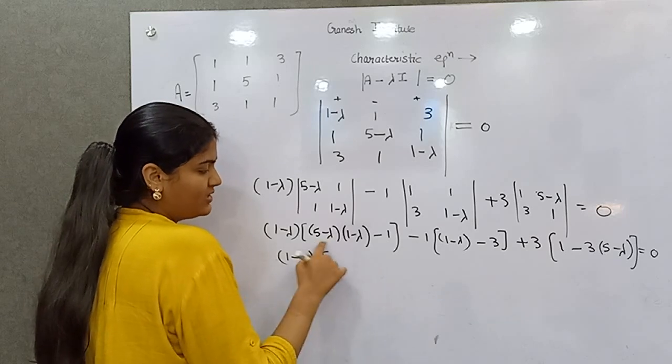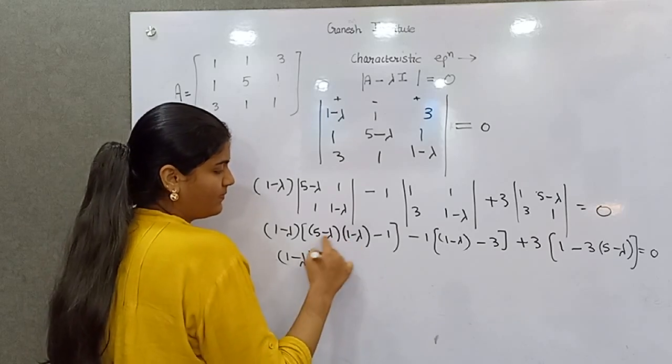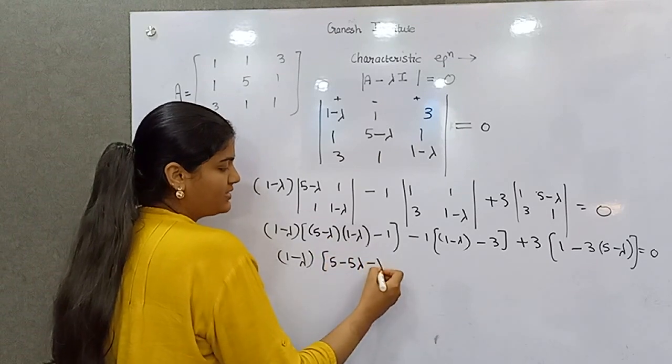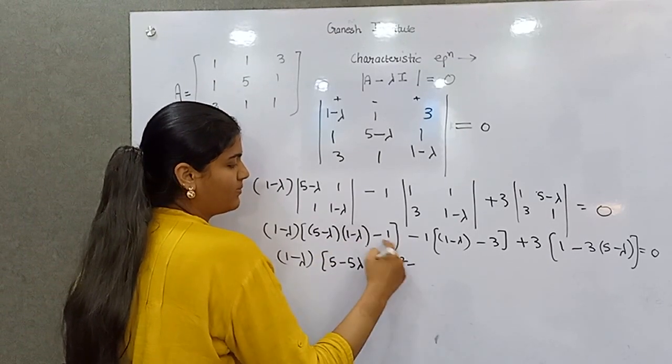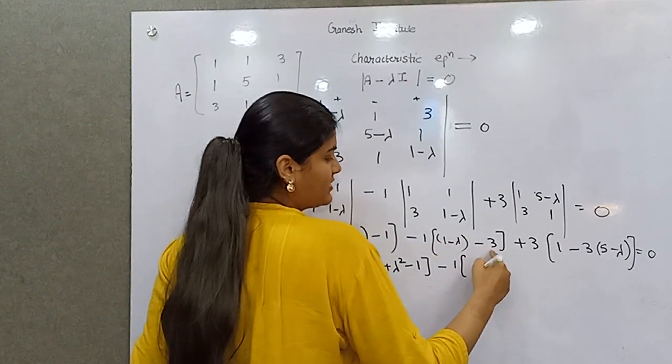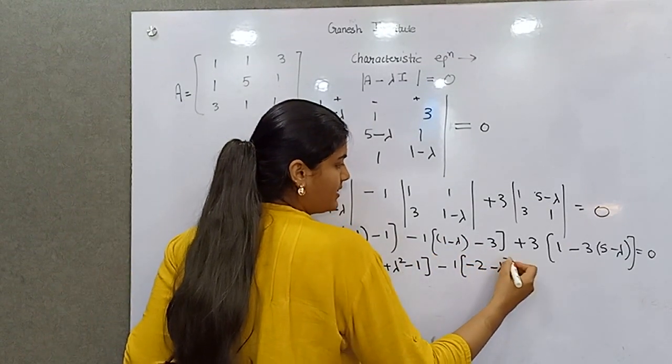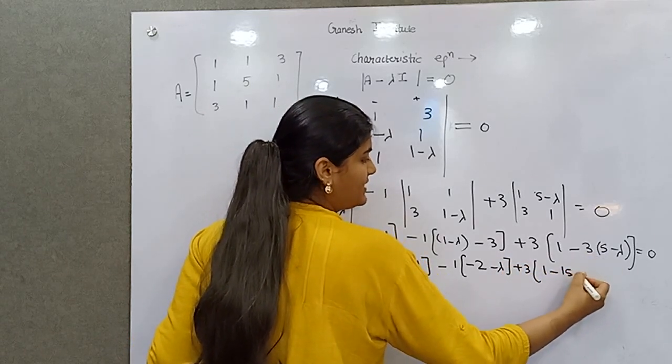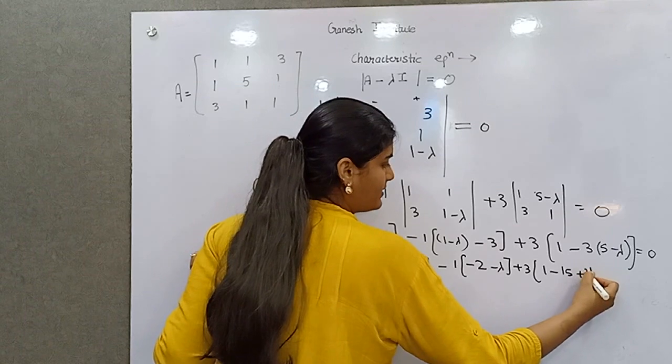Now multiply it: 5 minus 5 lambda minus lambda plus lambda squared minus 1. 1 minus 3 is minus 2, minus lambda. 5 times 3 is 15 plus 3 lambda.